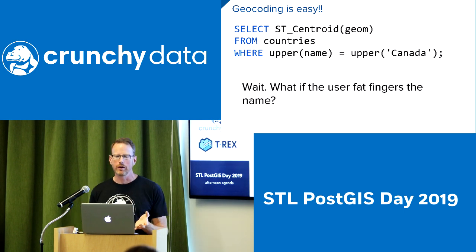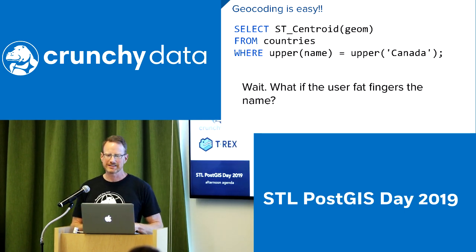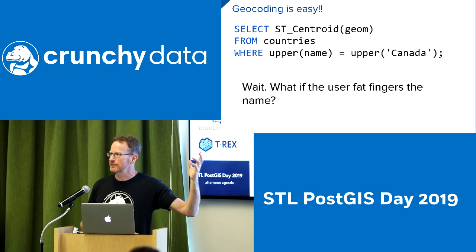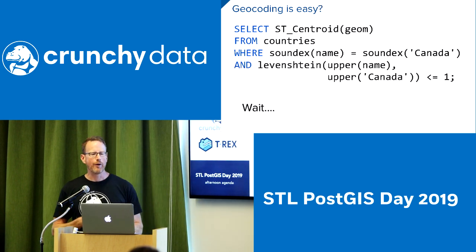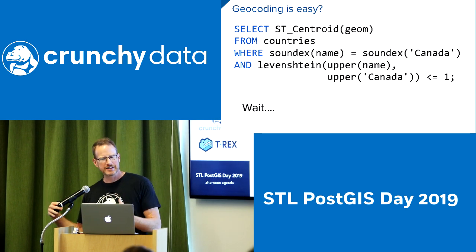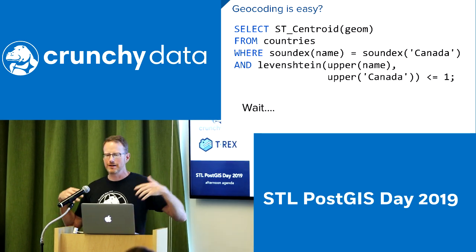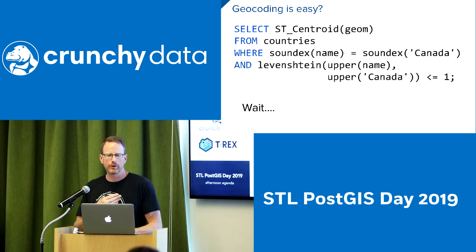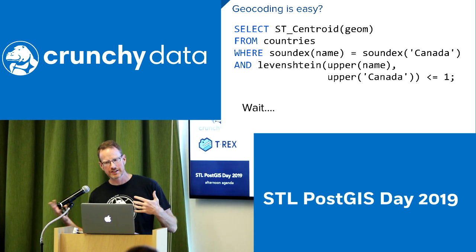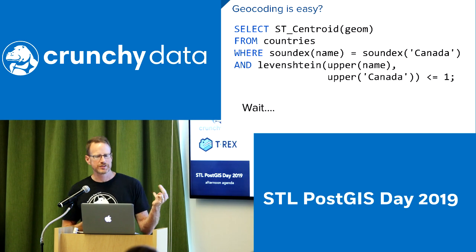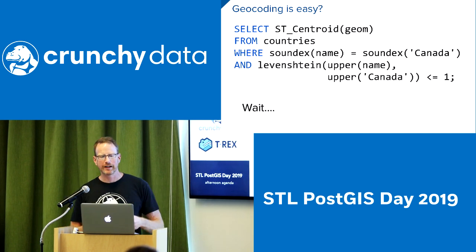Except users aren't always great at typing. Sometimes I type Canada, sometimes I type Canadia. How do I get around that? I can do a soundex search — a phonetic simplification of both the names in my database and the user input — for an initial pass. I can index that functionally and then do a Levenshtein distance comparison. That'll handle the off-by-one problem — if someone types Canadia, Canada will still match because there's only one character difference.